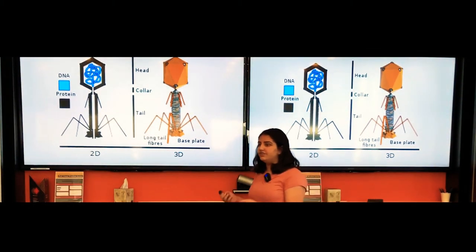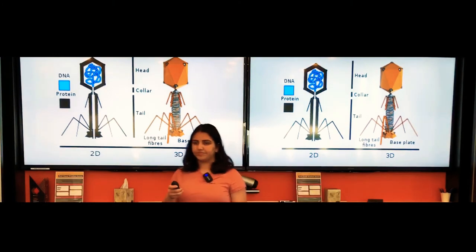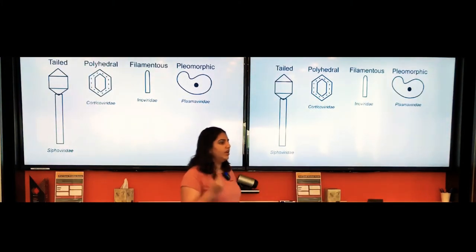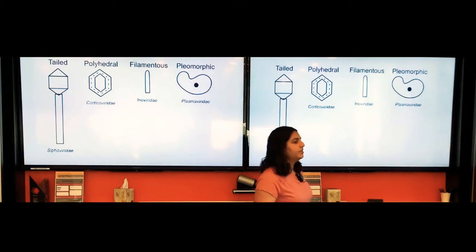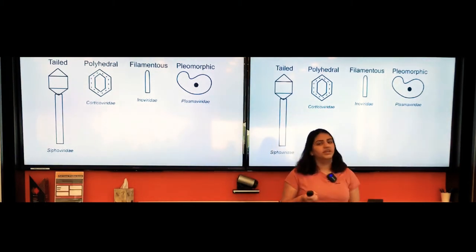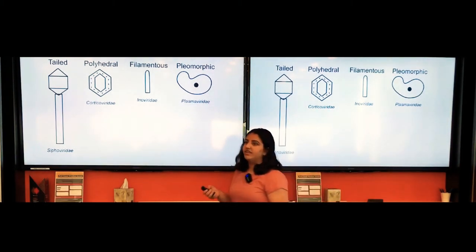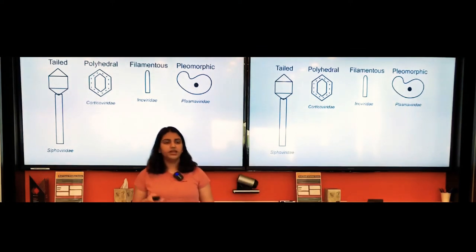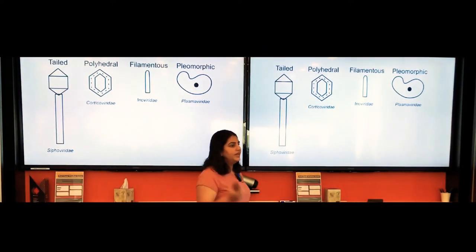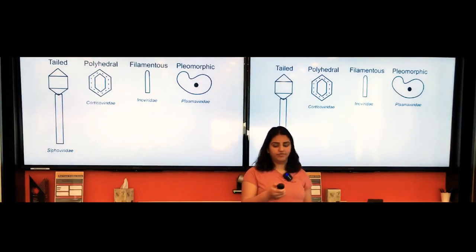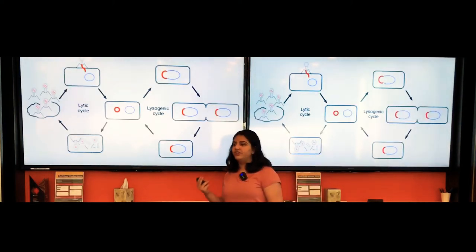Phages can be roughly categorized by shape into pleomorphic, filamentous, tailed, and polyhedral phages. Tailed phages make up 96% of the phage population.